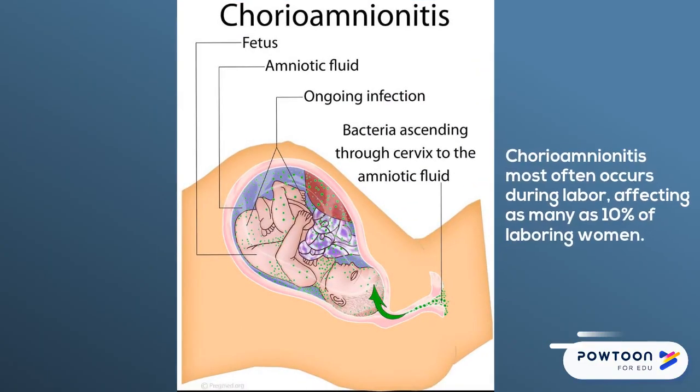Chorioamnionitis occurs during labor and affects about 10% of laboring women. The biggest risk factor is prolonged rupture of membranes. In this picture, you can see the bacteria ascending through the cervix and into the amniotic cavity, where it will affect the amniotic fluid and could potentially affect the fetus as well.